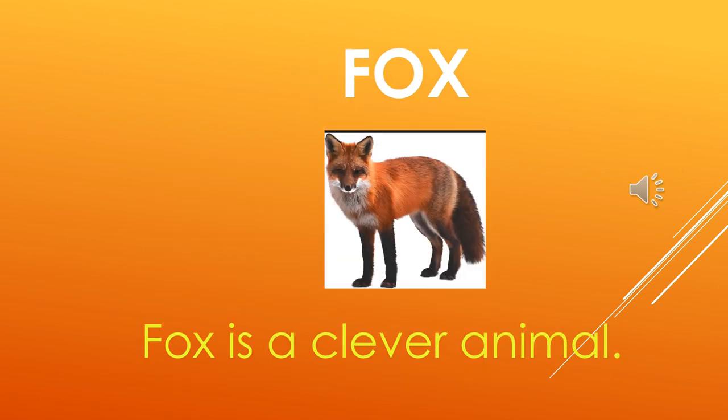The next word is F and OX — fox. We know fox is a type of animal, and it is a very clever animal. The sentence is: the fox is a clever animal. The fox is a clever animal. So, children, we have now learnt a few words and sentences with OX.